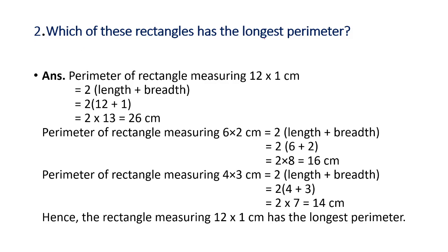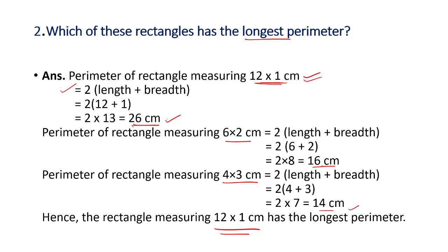Now, which of these rectangles has the longest perimeter? To find the perimeter of a rectangle, the formula is twice the sum of length and breadth. The perimeter of the rectangle measuring 12 into 1 cm is 26 cm. The perimeter of the rectangle measuring 6 into 2 cm is 16 cm. The perimeter of the rectangle measuring 4 into 3 cm is 14 cm. So the rectangle of dimensions 12 into 1 cm has the longest perimeter, as 26 cm is greater than 16 cm and 14 cm.